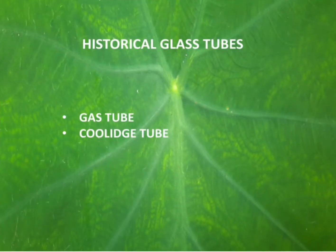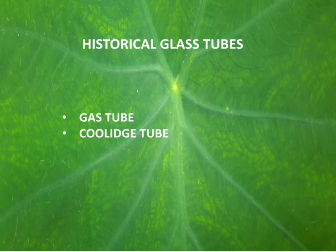These are the two tubes we are going to discuss in this video. First we have the gas tube. In the beginning we were using gas-filled tubes in order to produce x-rays. Later on, the gas tube was replaced by the Coolidge tube. The Coolidge tube is very much similar to the modern x-ray tube that we use today.